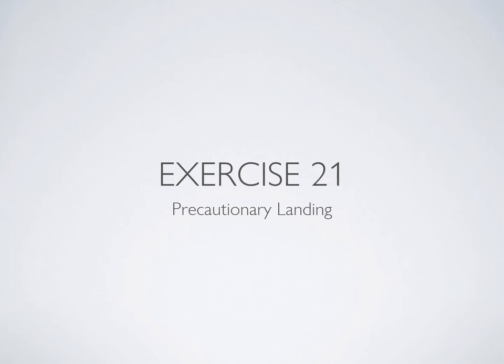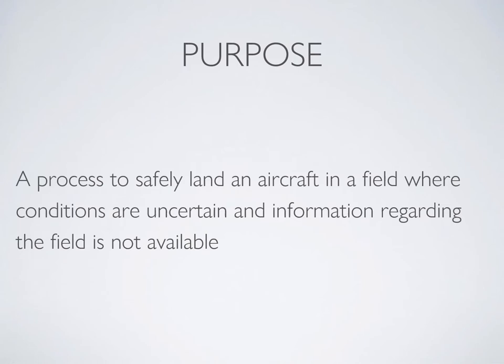Welcome to the ground instruction for exercise 21 in the flight training manual, which is about precautionary landings. We learn these because you're going to have to demonstrate one on your private pilot or commercial pilot flight test. A real-world scenario would be something like you're on a cross-country and need to put the airplane down — maybe weather is bad, you're low on fuel, or you need to land on an unknown runway or grass field and aren't sure about the surface.